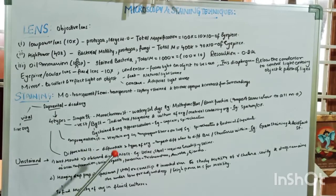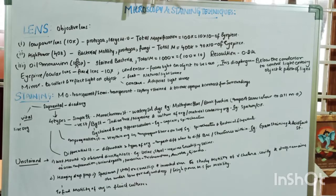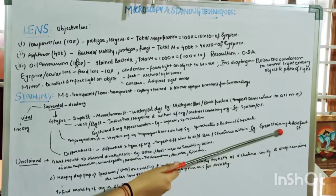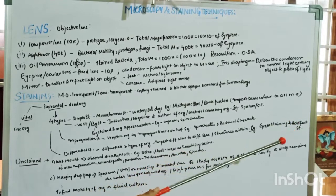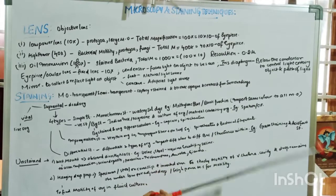Differential staining imparts different colors to different structures within organisms. For example, if all structures of a cell are stained the same color, we cannot differentiate the cytoplasm from the nucleus. Differential staining includes gram staining, which differentiates bacteria into gram-positive and gram-negative, and acid-fast staining, which is used for bacteria with very rigid cell walls that resist ordinary staining. These will be discussed in detail later.